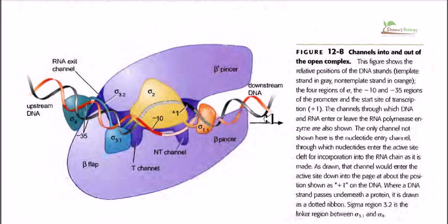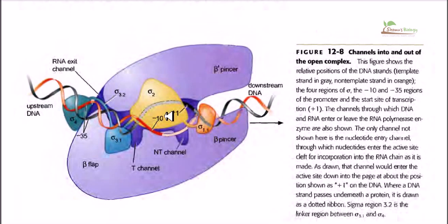When DNA enters the RNA polymerase, sigma factor 2 and sigma factor 4 recognize the promoter and bind to it, making the RNA-DNA interaction stronger. A conformational shift then melts down some bases and opens up the DNA complex — this is called the open complex. The open complex allows nucleotide sequences to enter and attach one after another to make a long RNA chain, which exits through the RNA exit channel.